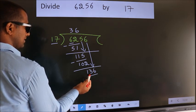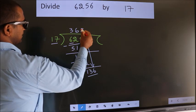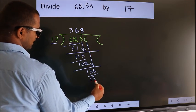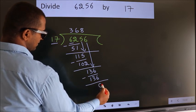When do we get 136? In the 17 table, 17 times 8 is 136. Now we subtract. We get 0.